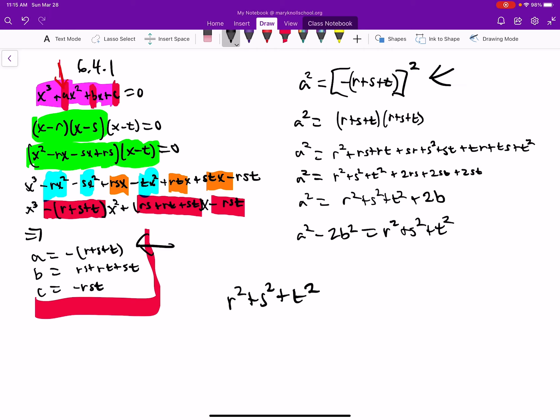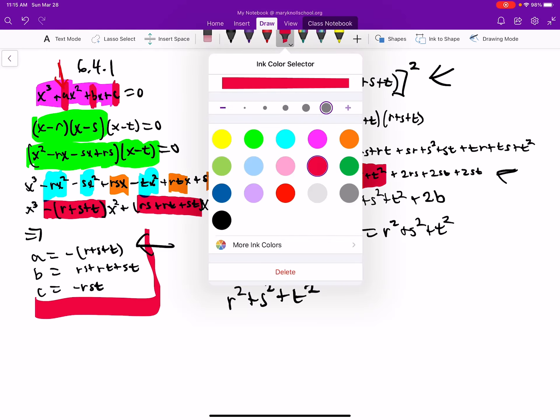And what we end up with is this right here. So we got what we wanted with the r, the s, and the t. But what are all of these?